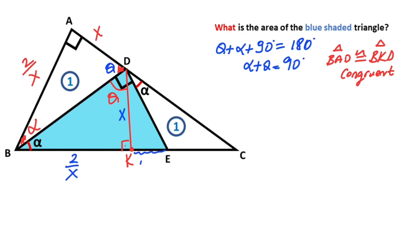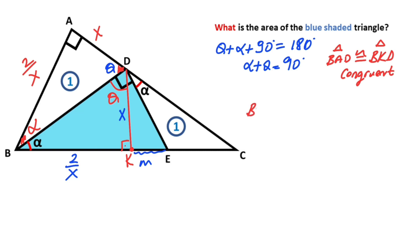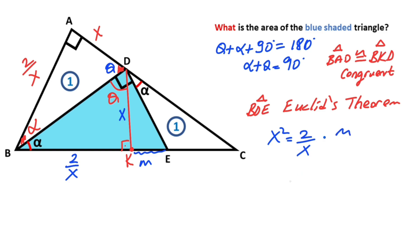Next step: let's call this length m. For this triangle we can apply Euclid's theorem. Therefore, according to Euclid's theorem, x squared equals 2 over x times m, so m equals x cubed over 2.